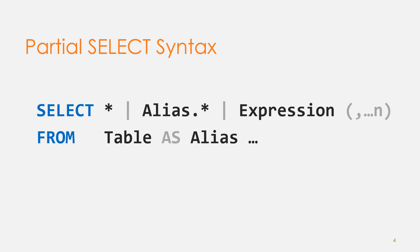Select lists are comprised of a comma-separated list of expressions, typically involving references to columns from the base tables, which are evaluated in the FROM clause of the query. For many queries, the expressions consist of the base columns directly,